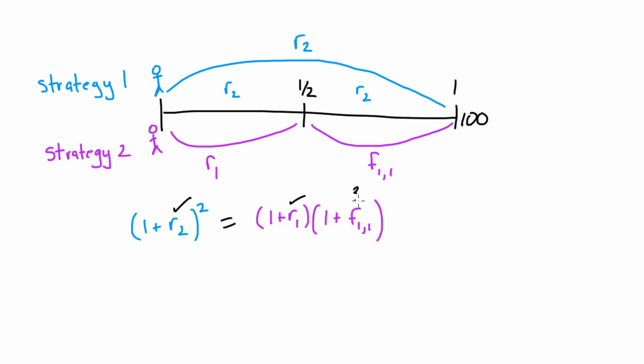We don't know what the forward rate is for six months in the future for a six-month bond. But because this equality has to hold, we can do a little bit of algebra and figure that out.